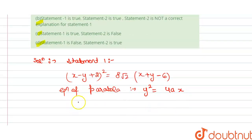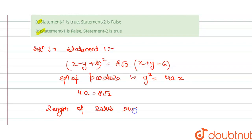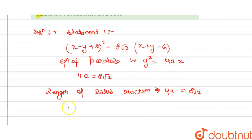From here we get 4a equals 8 root 2, and we know that the length of the latus rectum equals 4a, which is equal to 8 root 2. So Statement 1 is correct.